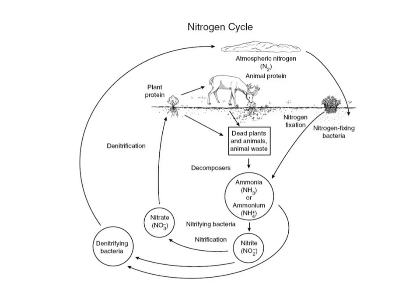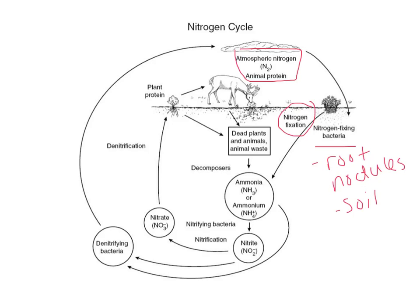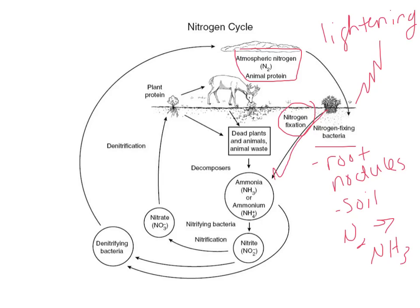We have free nitrogen in the atmosphere, and remember that's a non-usable form. So we have to do the first step, which is nitrogen fixation. Nitrogen fixation is done by nitrogen-fixing bacteria — you can find those on the root nodules of things like legumes, and you can also find them free in the soil. Lightning can also do nitrogen fixation. So nitrogen fixation converts that free nitrogen into ammonia, done by nitrogen-fixing bacteria found on root nodules and in the soil, with lightning also contributing.